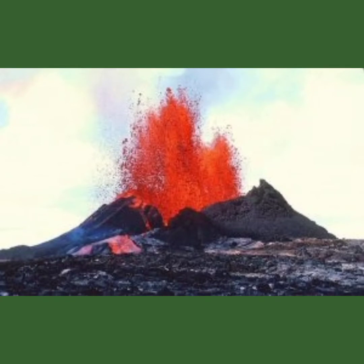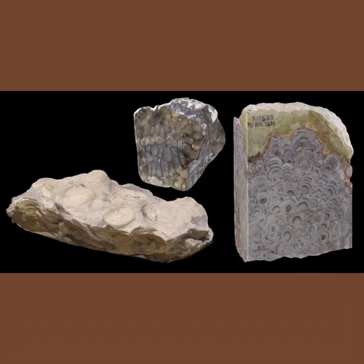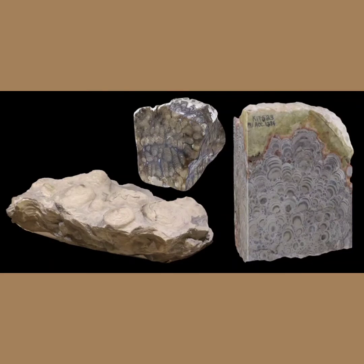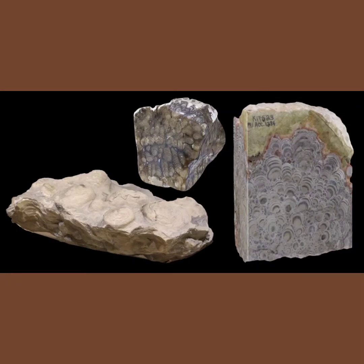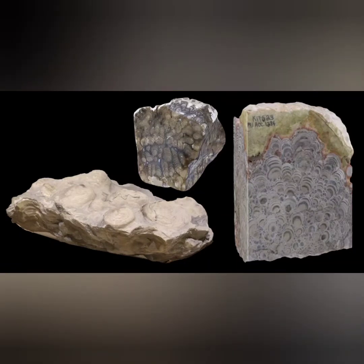Plates are always moving. Plate boundaries interact with each other in three ways: divergent, convergent, and conservative. Divergent plates pull apart from each other. Convergent plates push boundaries together, while conservative plate boundaries slide across from each other. These plate tectonics are necessary for building continents, implying that tectonic activity was present in the Archean Eon.